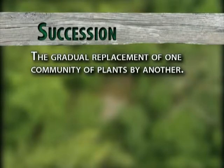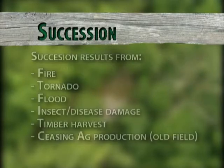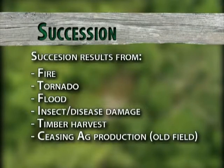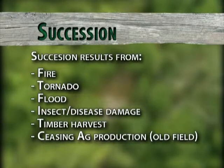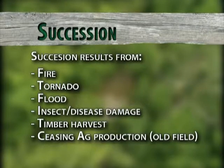Succession is a gradual replacement of one plant community by another. It starts with a change in the existing condition. The change can be the result of fire, tornado, flood, mortality due to a pest outbreak, a timber harvest, or simply ceasing agricultural activities in a field.